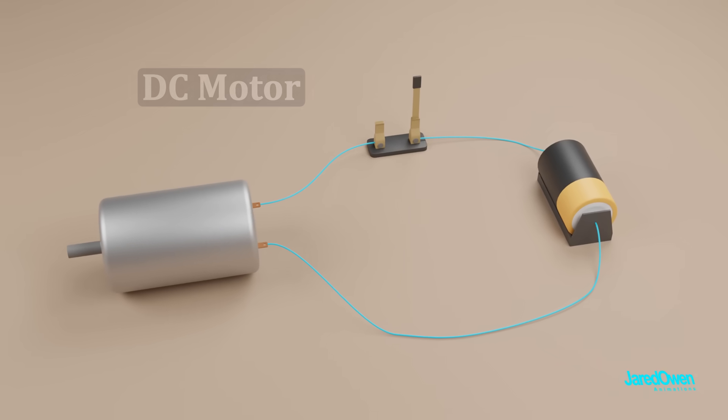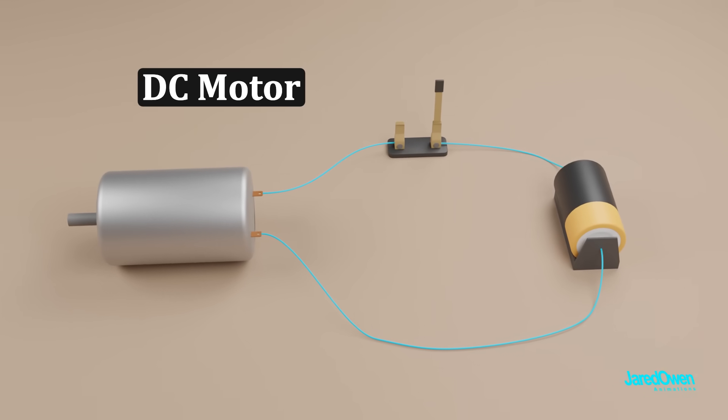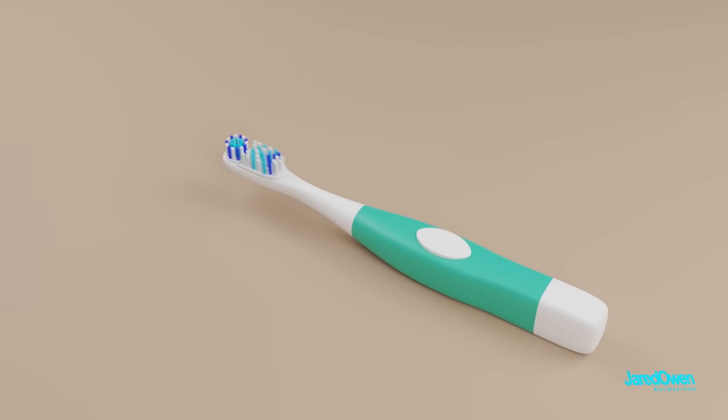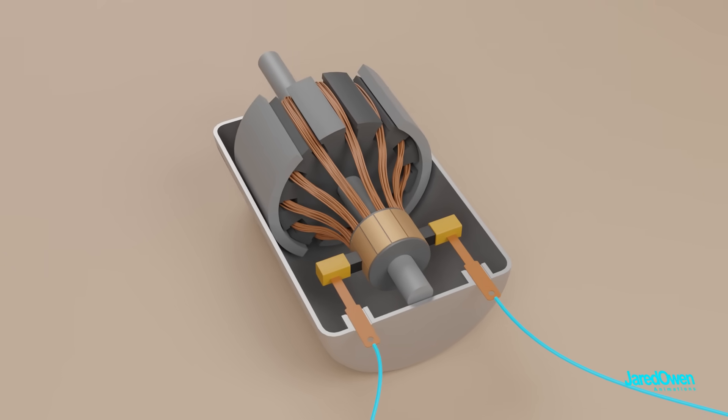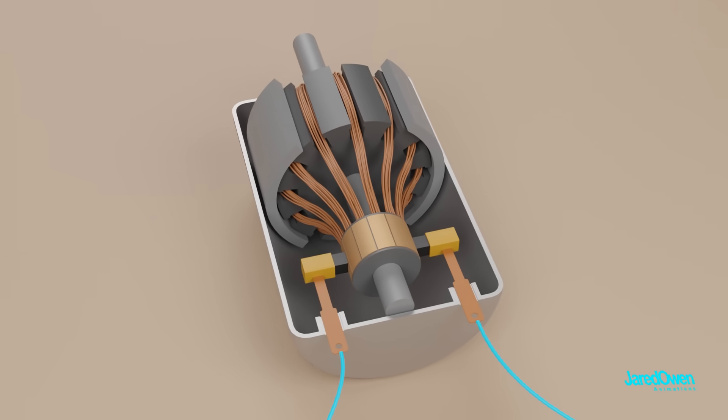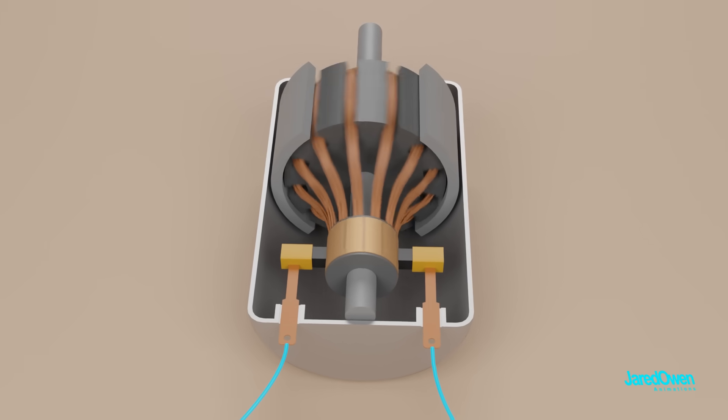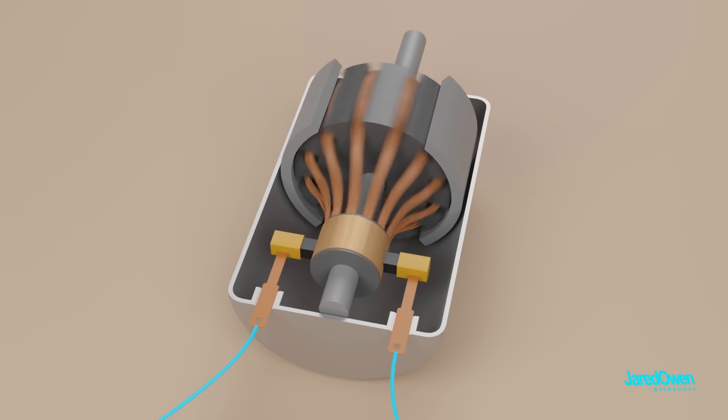What I've shown you in this video is called a DC motor. If you have a device that moves and is powered by a battery, there's a good chance there's a DC motor in it. Other types of electric motors will work a little differently than what I've shown here. No matter the type of motor, most of them will produce some type of spinning motion.